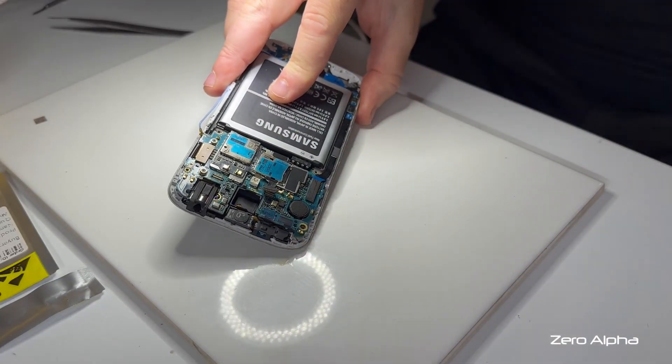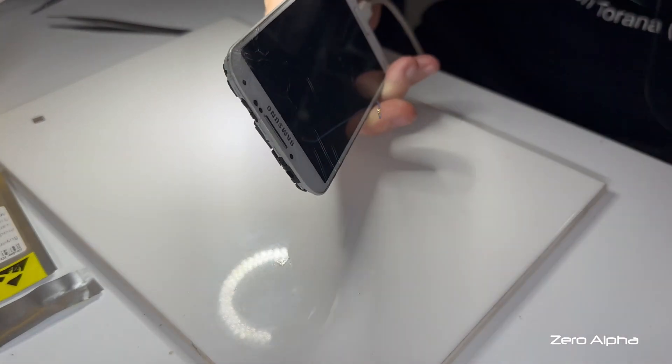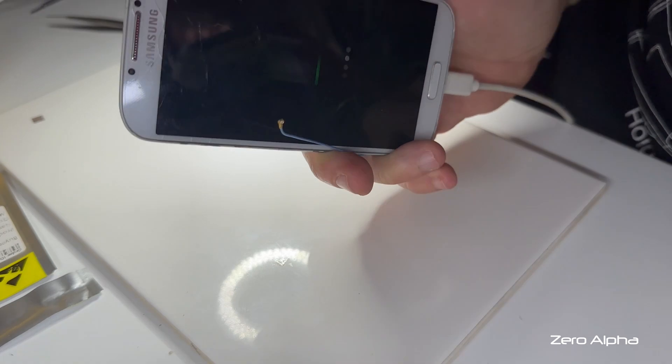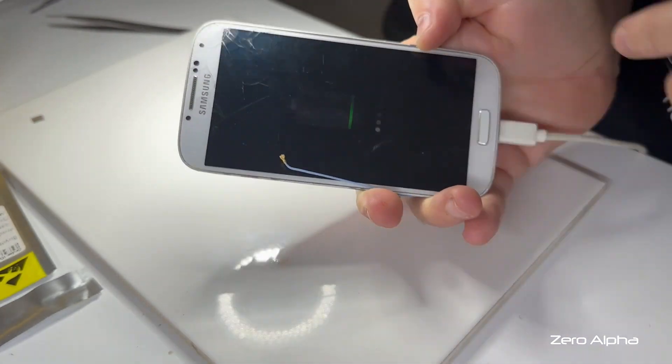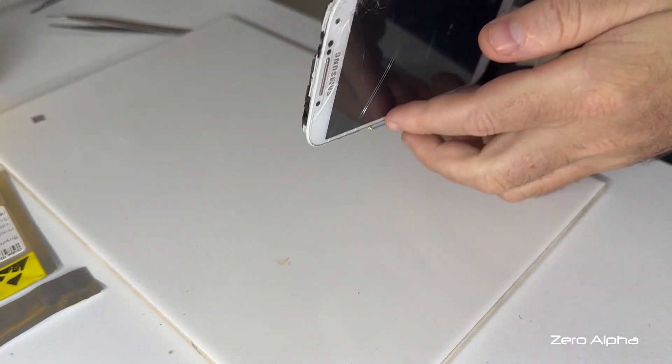We've connected the battery up and we do have a good charge signal coming from it. And we're also now getting the battery light on the screen, which is hard to see when there's light shining. So we'll have to give it a bit of time, see if it turns on.